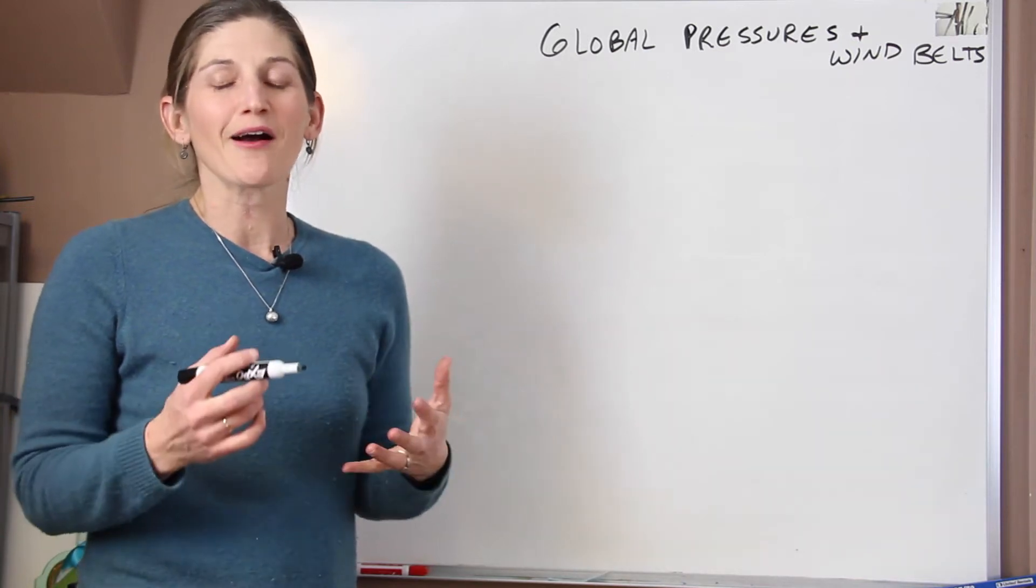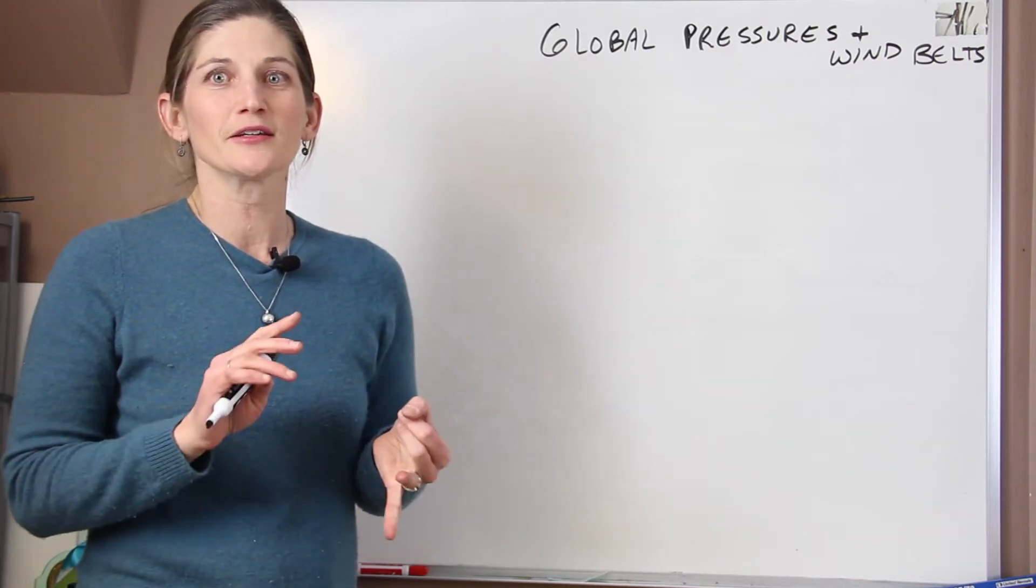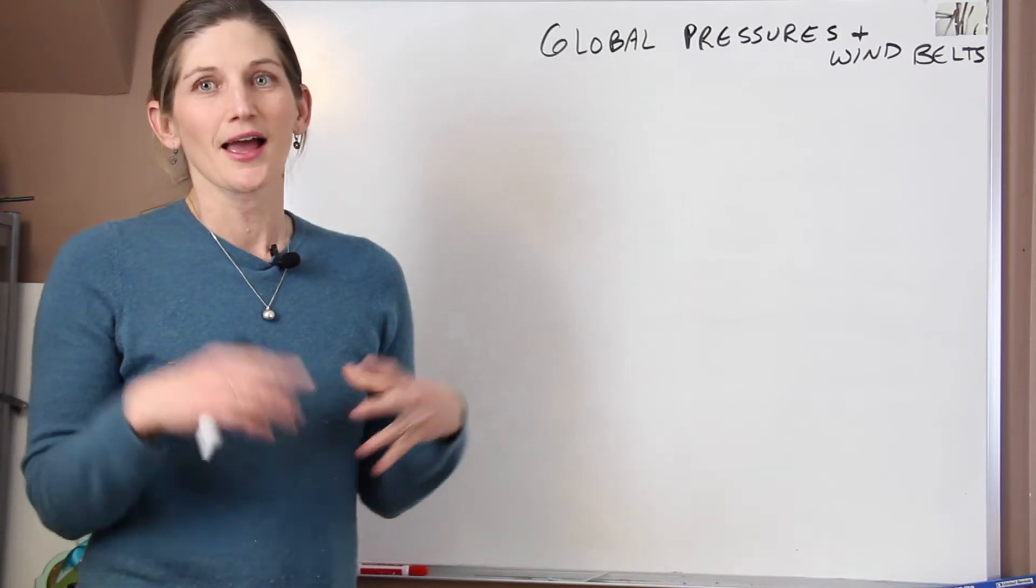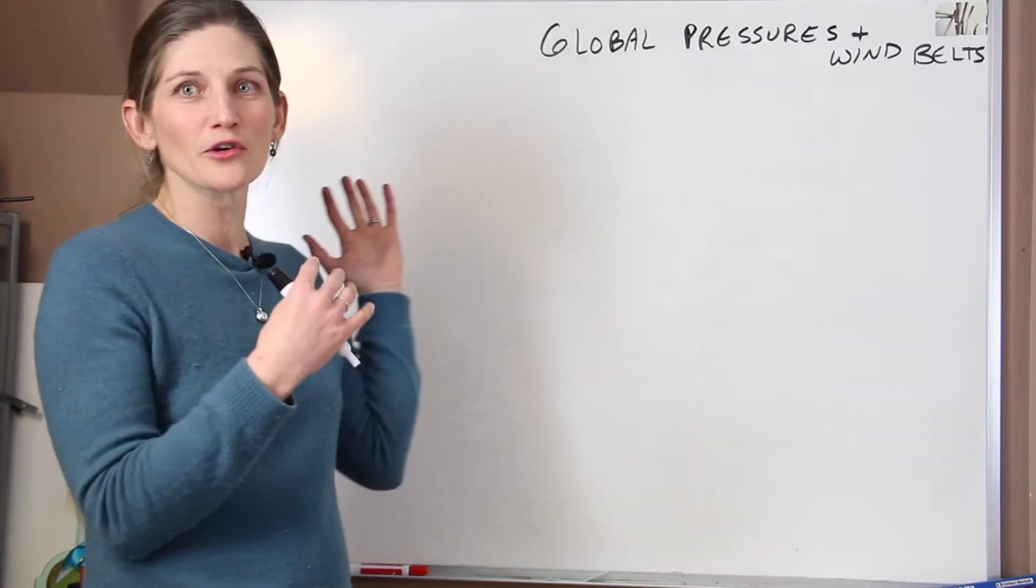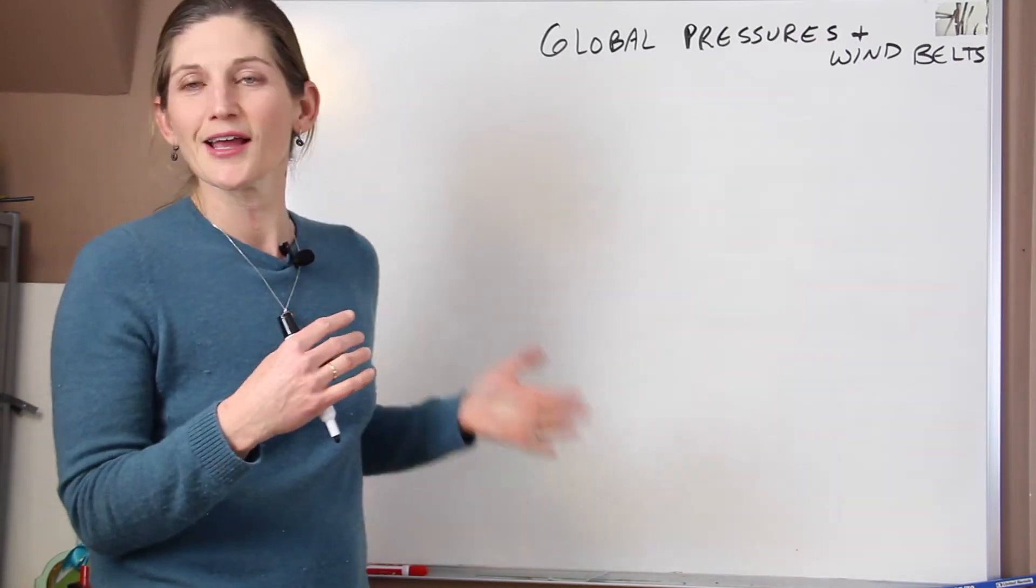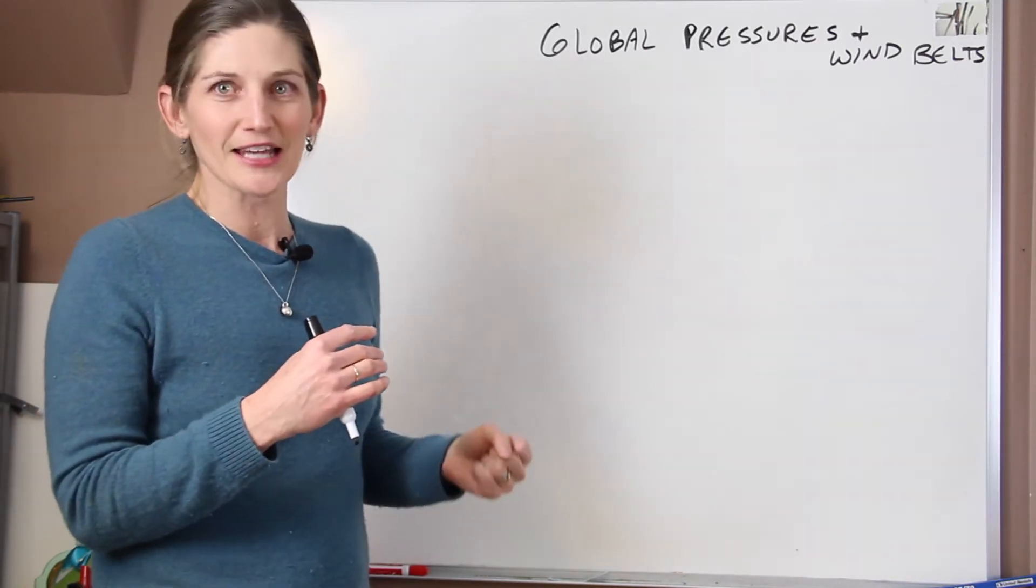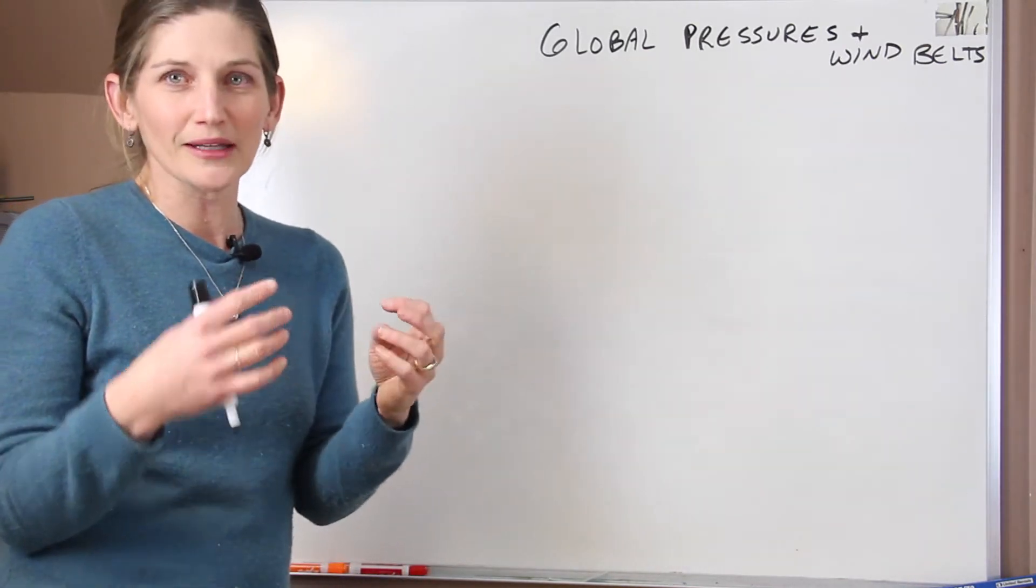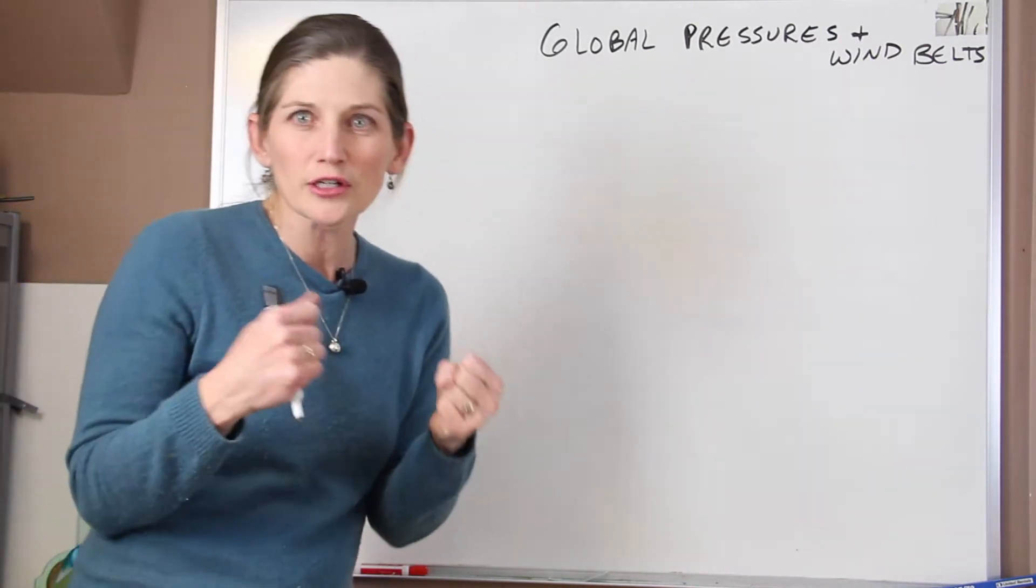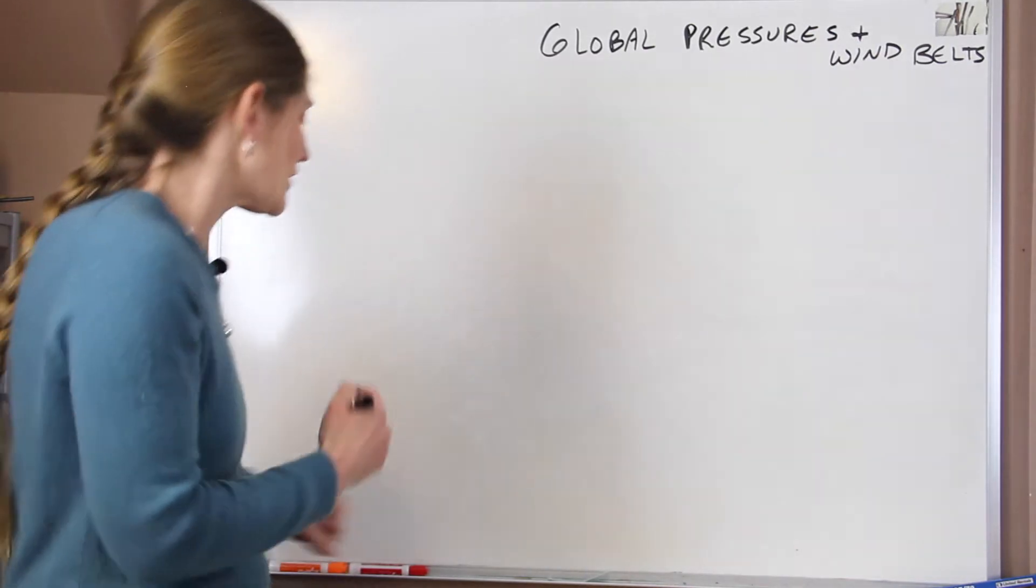In this quick lecture, we're going to talk about global pressure systems and global wind belts and how they all come together. I'm going to create a very complex picture. We're going to add layer upon layer to help you understand it so that you can kind of construct what's going on globally with all of the things with air pressure and wind. So how does it all come together?